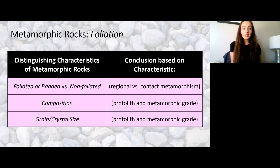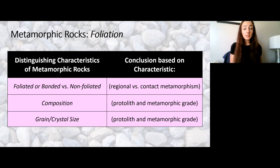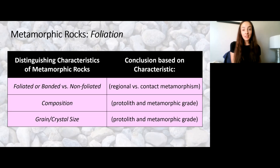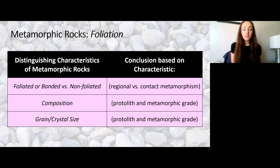The last thing I want to discuss is a more specific classification of metamorphic rocks. We talked about foliation and banding, which can tell you whether it's regional or contact metamorphism, but you can also use composition to determine the protolith or metamorphic grade. For example, if you have a quartzite, you can pretty easily tell it's all quartz, and from this you can be pretty sure the protolith was sandstone. If you have a slate, you're essentially sure the protolith was shale.